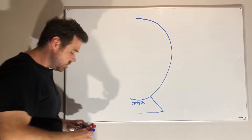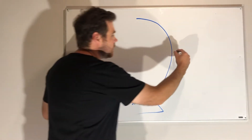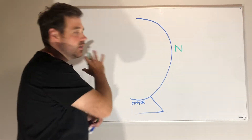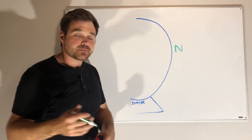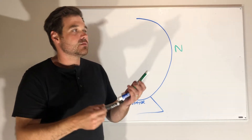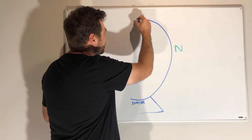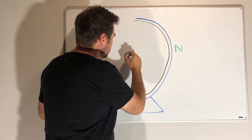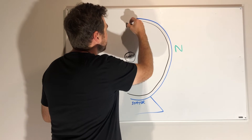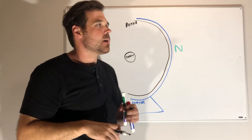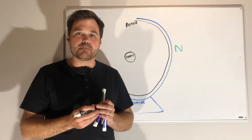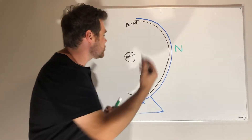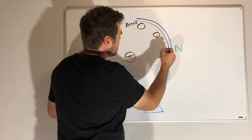Inside the stator we have a rotating magnetic field. At this very moment in time, we'll say this is the North Pole, which means that over here on the other side of this cross-section this would be the South Pole. Inside this stator we have the rotor — it's pretty close to the stator — and in the center of that rotor is the shaft. The rotor is made up of a whole bunch of rotor bars or rotor conductors throughout it.